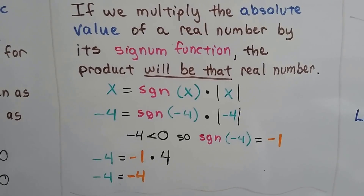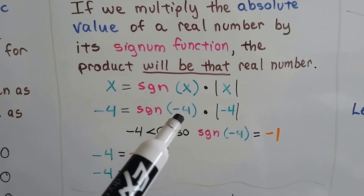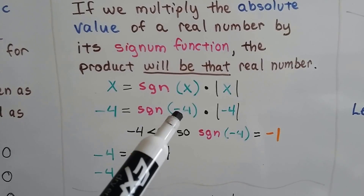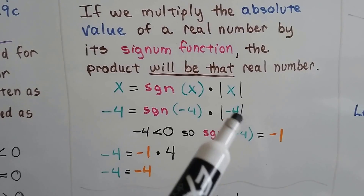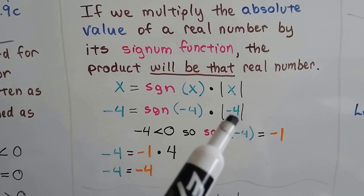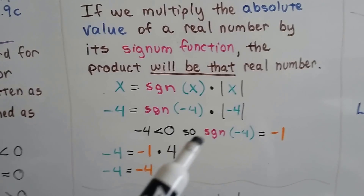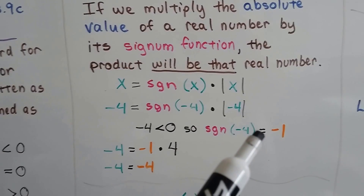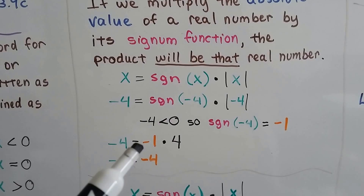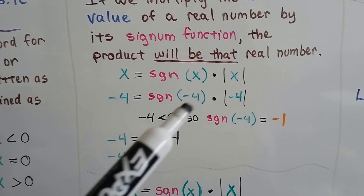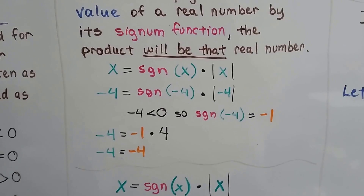Let's try negative four. Negative four equals the sign function of negative four times the absolute value of negative four. The absolute value of negative four is just four. And because negative four is less than zero, the sign of negative four is negative one. So we're saying negative four equals negative one times four — and yes, it does. See how that worked out?